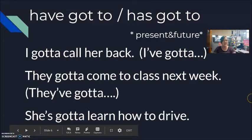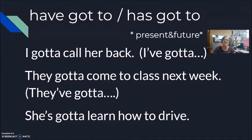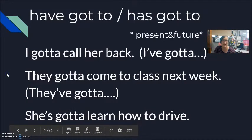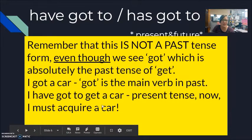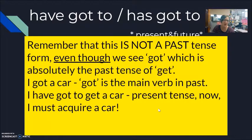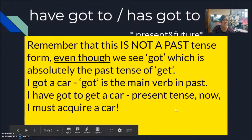With he, she, or it: 'She has got to learn how to drive' — 'She's gotta learn how to drive.' One last note: 'have got to' and 'has got to' are not past tense. Even though 'got' is absolutely the past tense of 'get' — for example, 'Yesterday I got a car' — in 'I have got to get a car' or 'I gotta get a car,' this is present tense meaning 'I must get a car.'